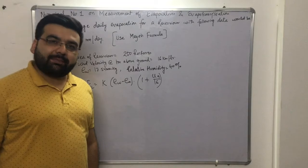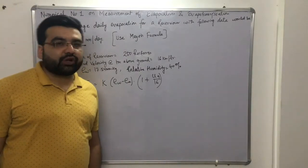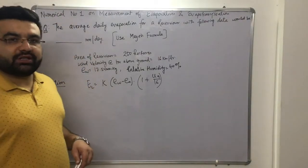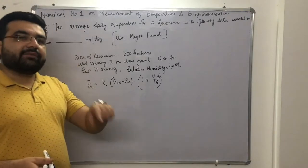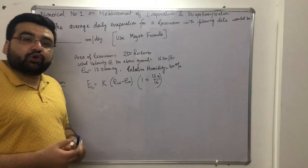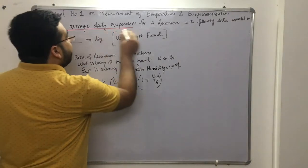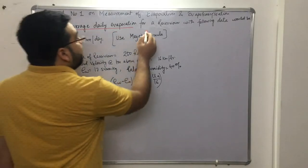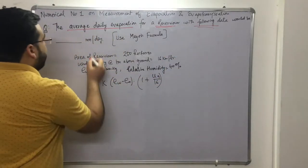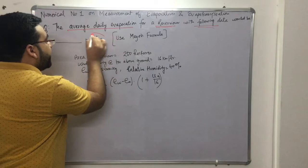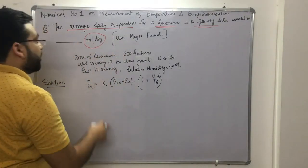Subject: Hydrology, Chapter: Evaporation. Topic: Numerical number one on measurement of evaporation and evapotranspiration. We have already discussed the concepts of evaporation, methods of determination of evaporation, and evapotranspiration. Now it's time to solve a few numericals. The first numerical asks us to find the average daily evaporation for a reservoir using Meyer's formula.